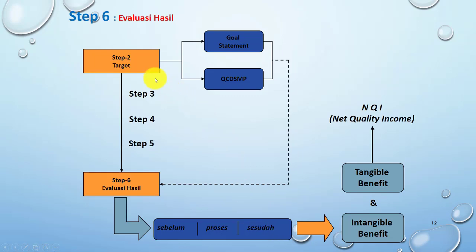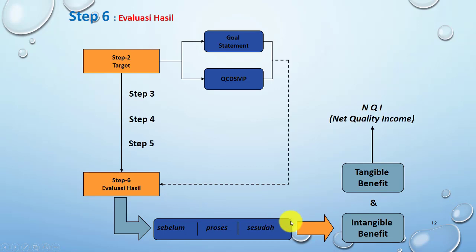Berikut langkah-langkahnya: langkah kedua kita mendapatkan target, kemudian langkah ketiga, keempat, kelima — kita merencanakan ide-ide perbaikan, mencari akar masalah, merencanakan ide-ide perbaikan, implementasi perbaikan, dan kita evaluasi hasil perbaikan. Di sini akan dilihat dari target yang ditetapkan di tahap kedua, bagaimana hasilnya sebelum proses dan sesudah perbaikan, terdiri atas intangible benefit dan tangible benefit. Dalam tangible benefit, contohnya adalah net quality income.